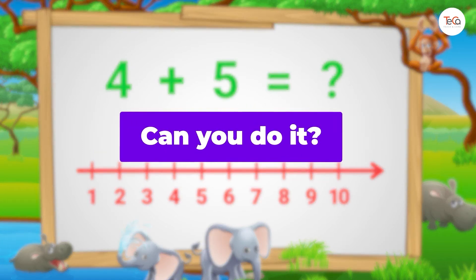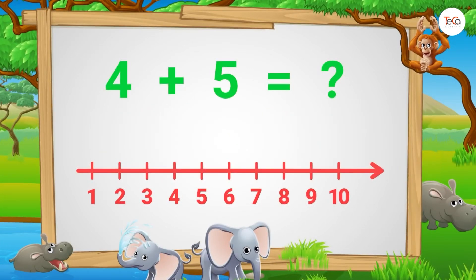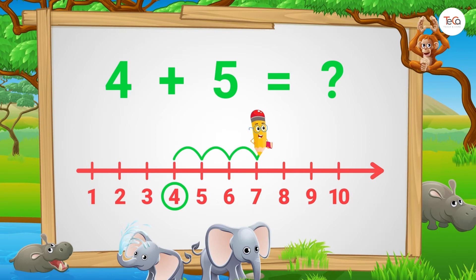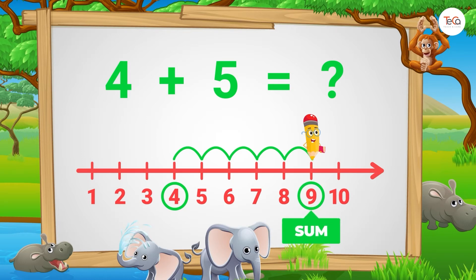Can you do it? We start from number 4. Then jump five numbers to the right. Then see the number where we stop to find the sum. Here we stop at number 9. So, 4 plus 5 equals 9.